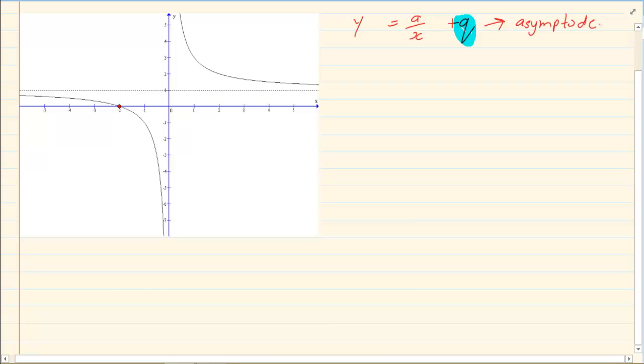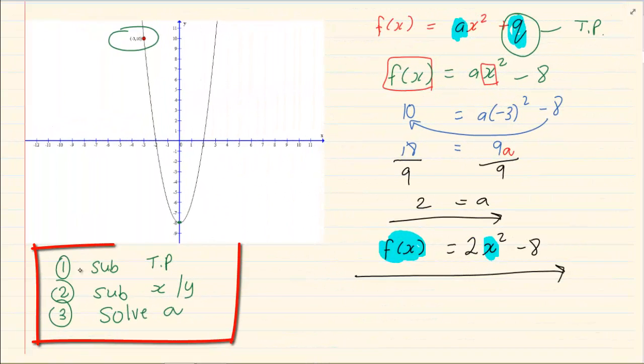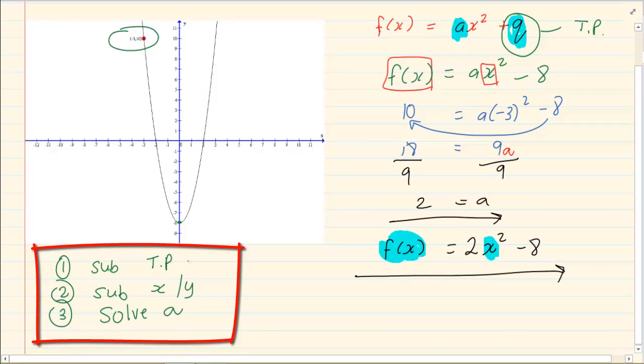This is very similar to when we were getting the equation of the parabola. It said substitute your turning point which was your q, substitute x and y, and then solve for a.